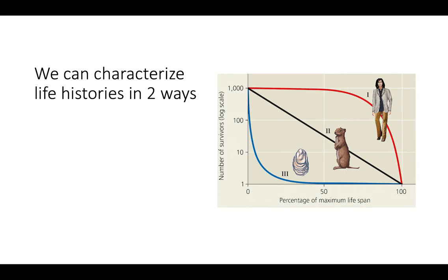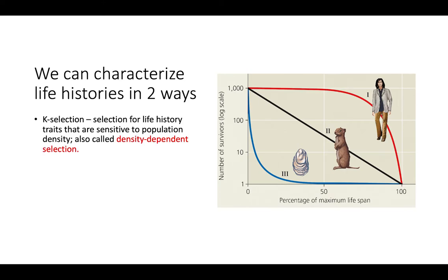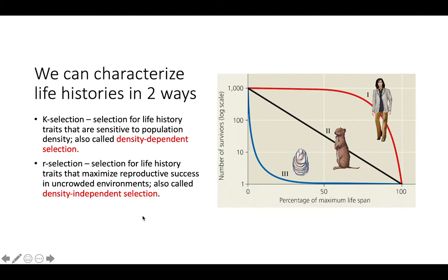We can characterize life histories in two ways. Here is the survivorship curve we saw in a previous video. The two ways are K-selection and R-selection. K-selection is the selection for life history traits that are sensitive to population density — also called density-dependent selection. K-selected species, like humans, produce few offspring, but those offspring require a lot of parental attention and energy, and they tend to have higher rates of survival earlier in their lifespan.